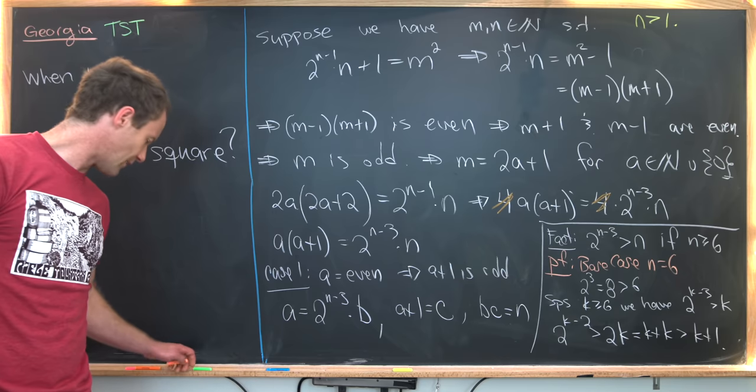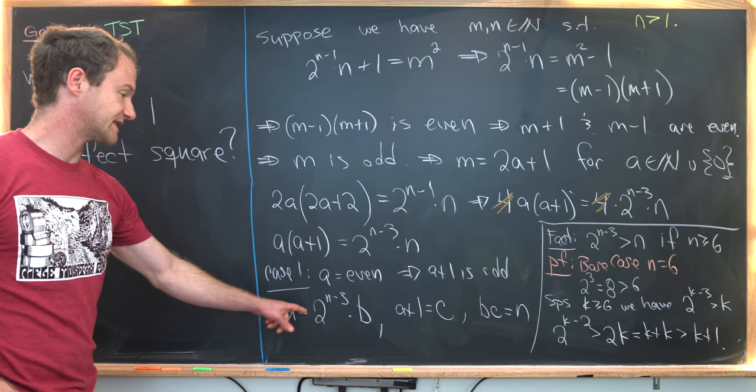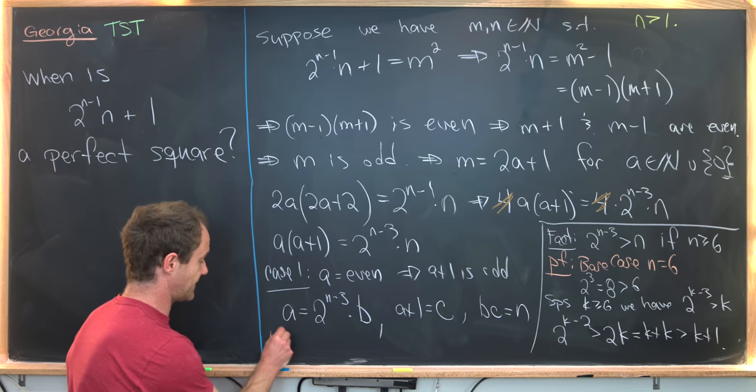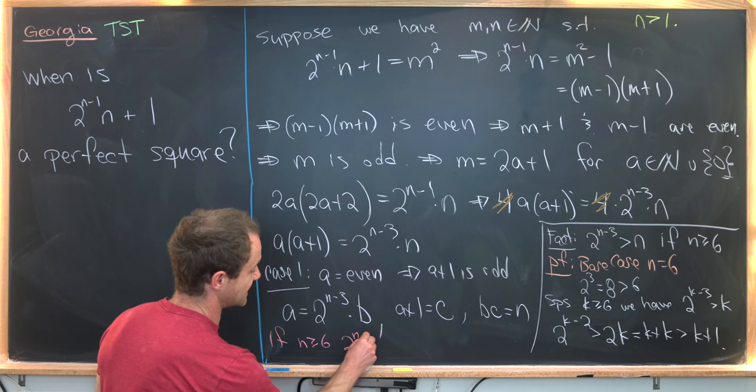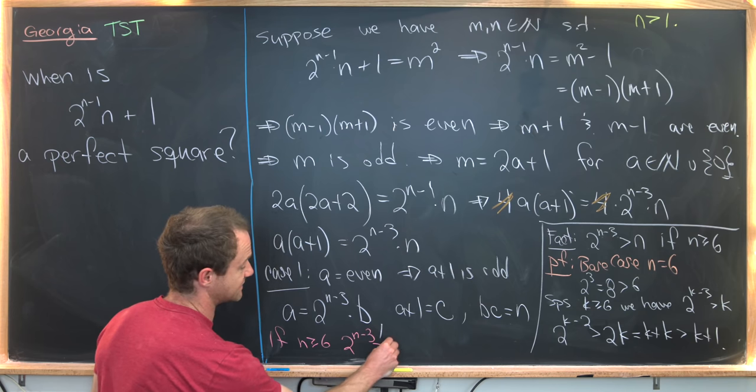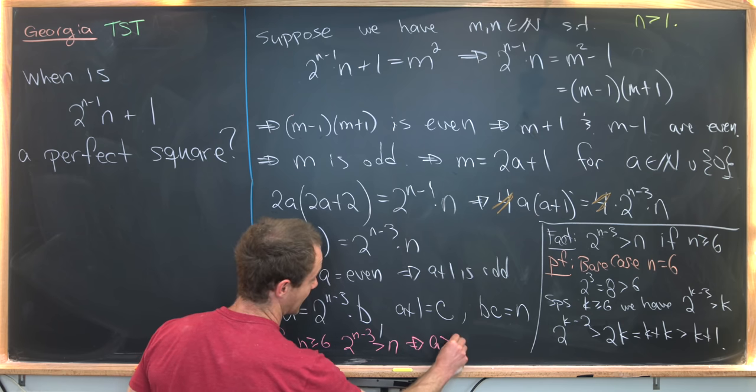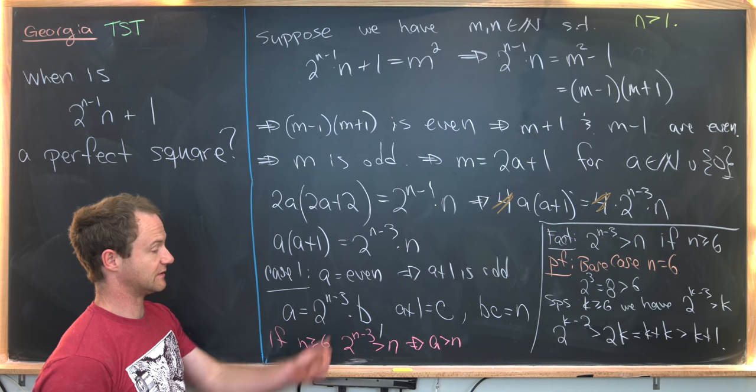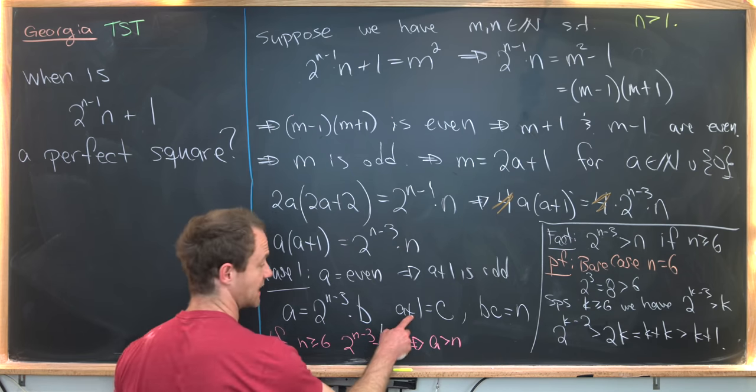But how is that a problem? Well, that's a problem because that means if n is bigger than or equal to 6, 2^(n-3) is bigger than n, which tells us that a is bigger than n, right? Because a is a multiple of 2^(n-3).